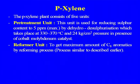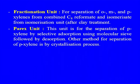The pretreatment unit reduces sulfur content, which is very important for catalyst protection. The reformer (catalytic reforming) unit is used to get the maximum amount of C8 aromatics. The same type of operation and units as in conventional catalytic reforming are used, with our objective being maximum benzene or xylene. The fractionation unit then separates ortho-, meta-, and para-xylene from the combined C8 reformate and isomerate after clay treatment.